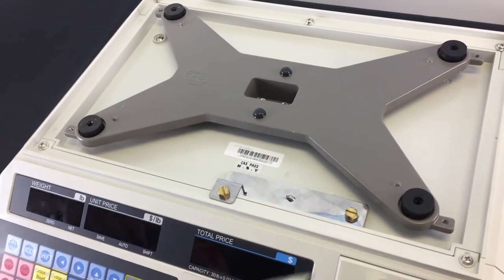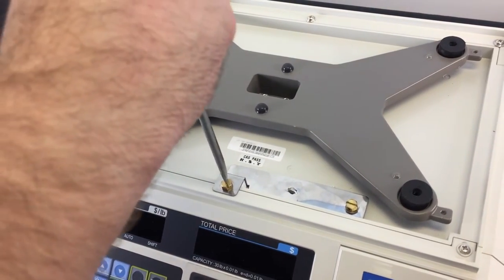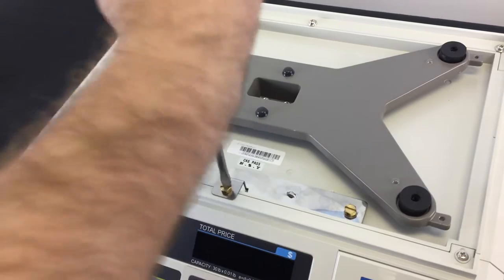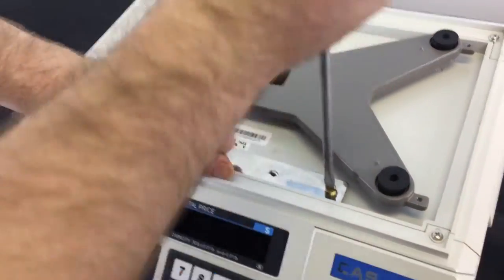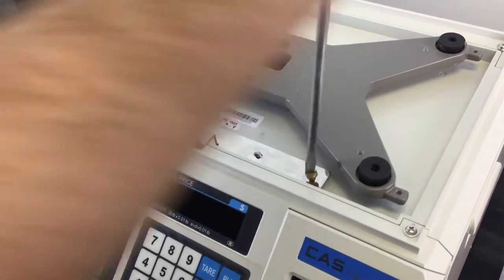You're gonna need a flathead screwdriver to remove these sealing bolts from the top of the scale. After you screw these out, you'll have access to your calibration plate.